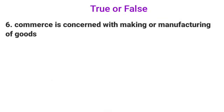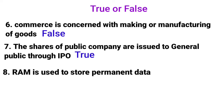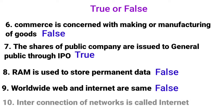Sixth — 'Commerce is concerned with the making or manufacturing of goods' — false; manufacturing is industry, not commerce. Commerce is about buying and selling. Seventh — 'The shares of a public company are issued to the general public through IPO' — true. Eighth — 'RAM in a computer is used to store permanent data' — false; RAM stores temporary data. Ninth — 'World Wide Web and internet are the same' — false; they are different. Tenth — 'Interconnection of networks is called internet' — true.